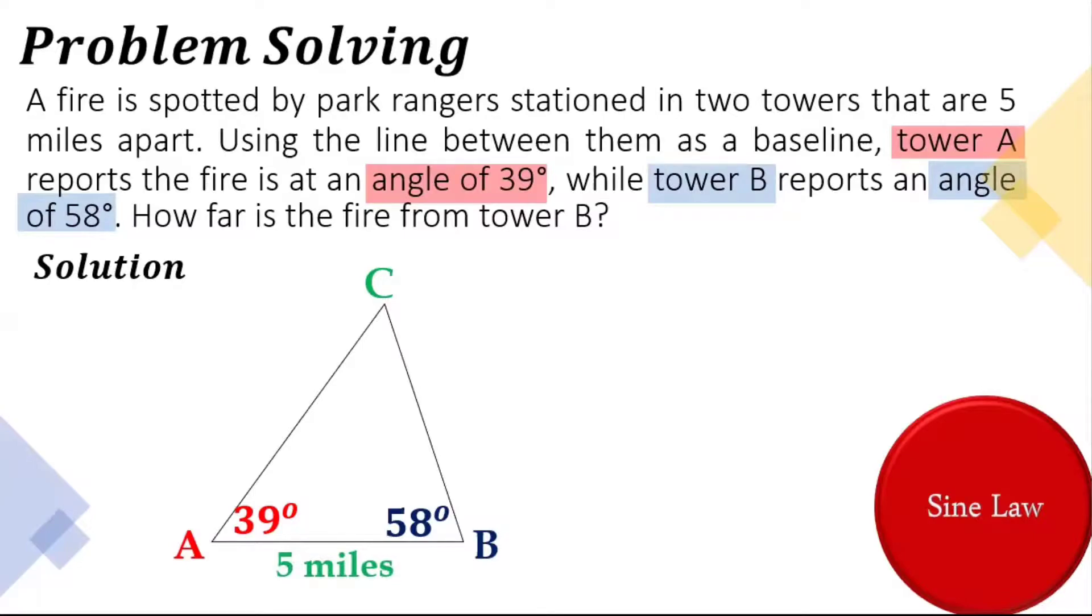Between Tower A and Tower B is five miles away. So we'll be looking for the distance between Tower B and the location of the fire, as well as the angle of the fire location is missing.